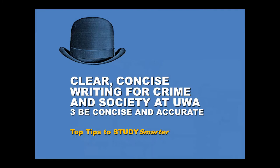Welcome to this UWA Study Smarter video all about writing clearly and concisely in crime and society at UWA. I'm Siri Barrett-Leonard. I work with the Study Smarter team at the University of Western Australia, and this is the third of three videos on this topic. Here we'll look at how to be concise and accurate. Proofread to make sure you've been concise so that every word counts, and accurate so that sentences contain correct punctuation, spelling, referencing and grammar.